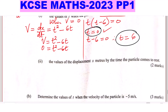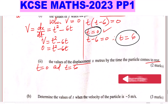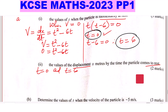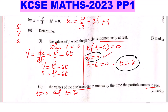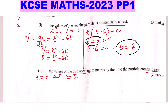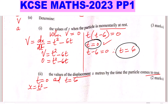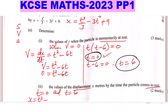Part 2: the values of the displacement x meters by the time the particle comes to rest. We have already calculated the values of t when the particle comes to rest — that is t equals 0 and t equals 6. So now we need to find the displacement at these times. We take the expression for displacement: x equals t cubed over 3 minus 3t squared plus 9.